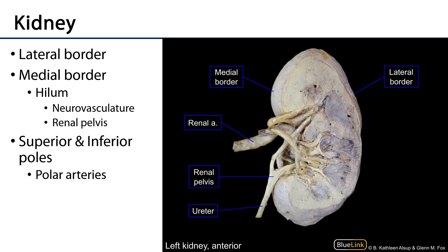The kidney itself has two borders and two poles. Laterally, there are the convex lateral borders. Medially, the borders are convex superiorly and inferiorly, and concave in a region known as the hilum. The hilum is where the neurovasculature and the renal pelvis — the structure that drains urine from the kidney — exist.